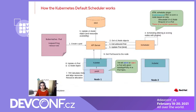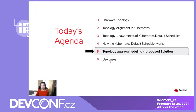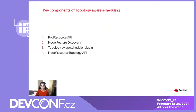In order to optimize cluster-wide performance, resource utilization, and the overall performance of the system, the default scheduler needs to be enhanced to increase the likelihood of a pod landing on a node where it will fit. The key components of our proposal are: Pod Resource API, Node Feature Discovery, Topology Aware Scheduler Plugin, and Node Resource Topology API. Let's deep dive into each of these to understand them better.